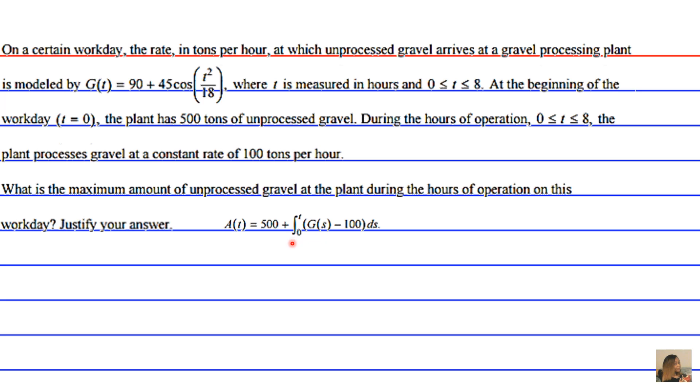So then we start our accumulation of gravel, the integral from 0 to t, because we don't know where that t reaches the maximum. And we take the integral of G(s), the amount of gravel arriving, minus 100, the rate at which the gravel is processed. So we do our input minus our output, and that's going to give us our accumulation.